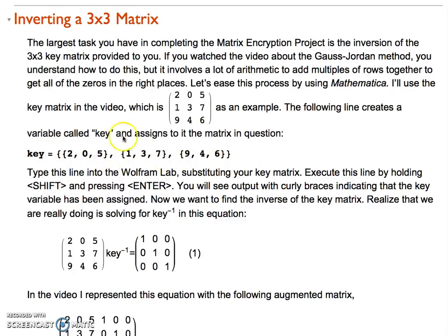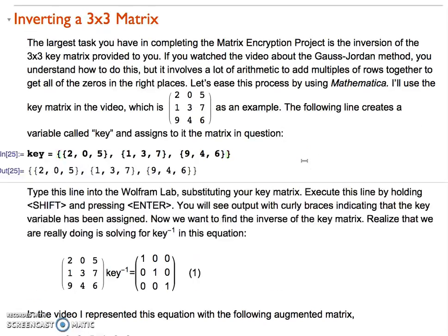What you see here in this key equals line represents the matrix that we see in actual matrix form. To execute that or to make it run so that key is actually assigned that value, you hold down shift and press enter. When you do that, you see an input line and an output line outputting the expression that has been assigned to key.